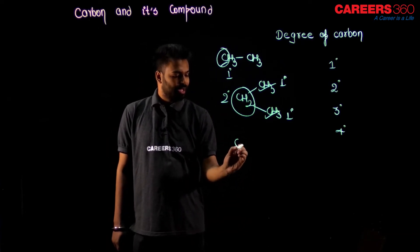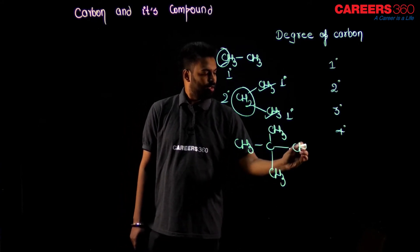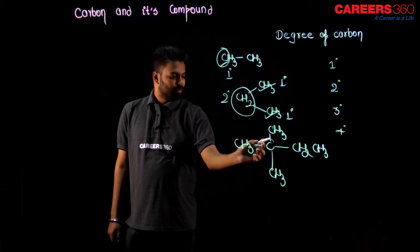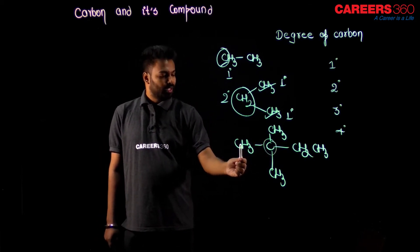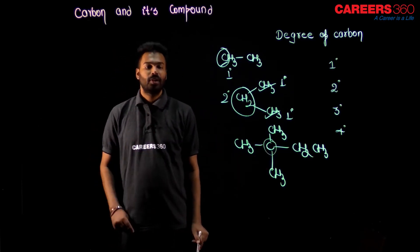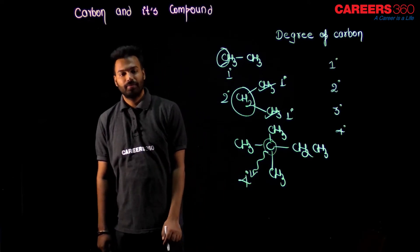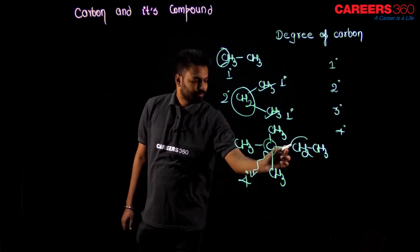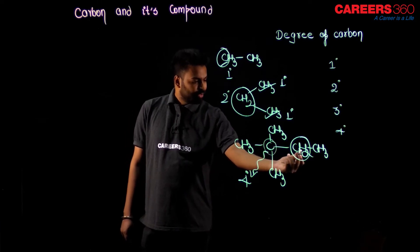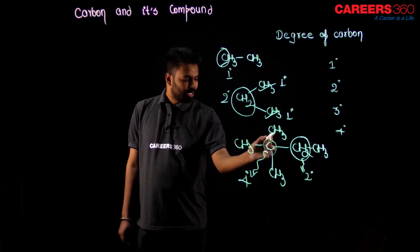Let us see more examples. Suppose I write a compound with CH3 groups: CH3, CH3, CH3, and CH3 all connected to a central carbon, plus a CH2 and CH3 chain. The central carbon is directly connected to one, two, three, and four carbons. So this particular carbon is four degree carbon, or quaternary carbon. The CH2 carbon is two degree because it is connected to one carbon on the left and one carbon on the right. All remaining carbon atoms are one degree.